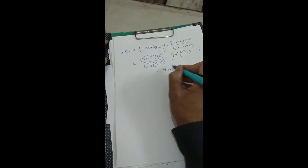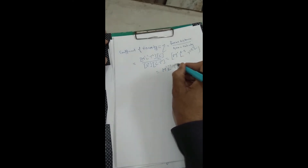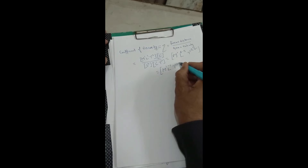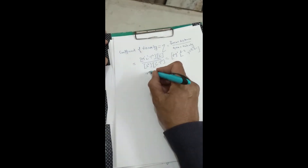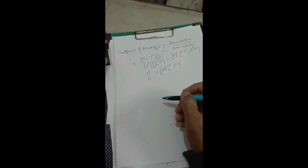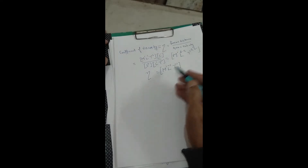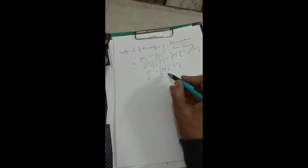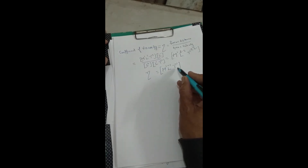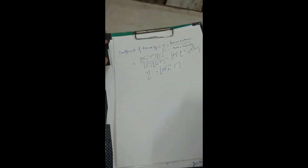So the dimension formula for coefficient of viscosity is M1 L-1 T-1. You can also derive it directly from force × distance / (area × velocity), but it is easier to just memorize M1 L-1 T-1 directly.